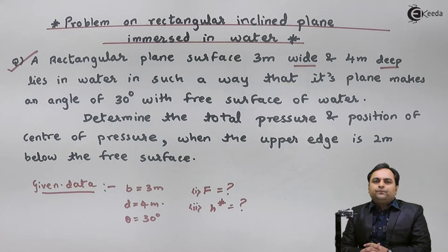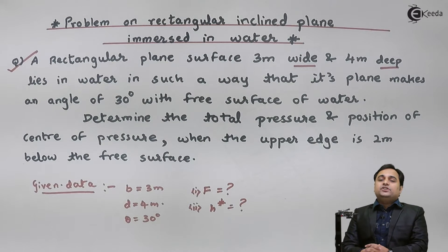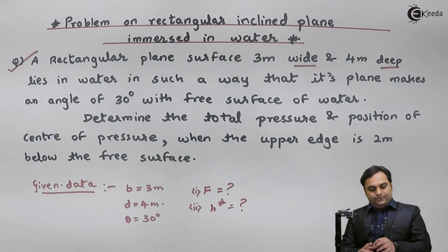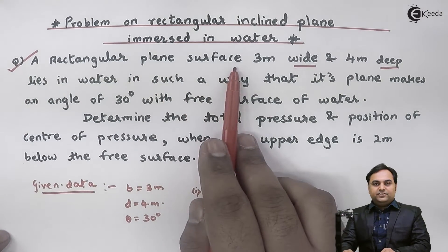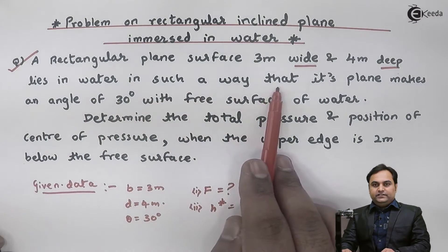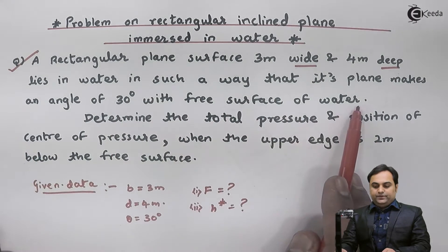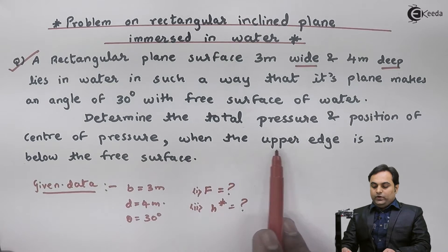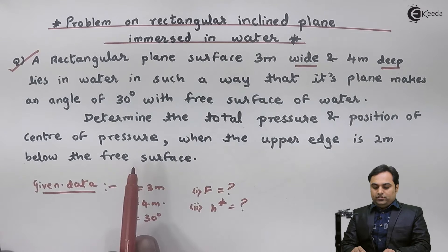In this video we will see a rectangular inclined surface which is immersed in water and the effects of water on that inclined surface. A rectangular plane surface 3 meter wide and 4 meter deep lies in water such that its plane makes an angle of 30 degrees with the free surface of water. Determine the total pressure and position of center of pressure when the upper edge is 2 meter below the free surface.